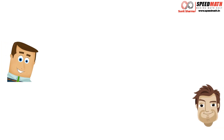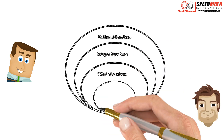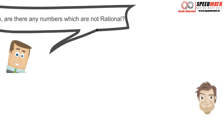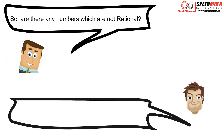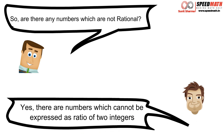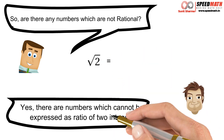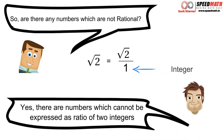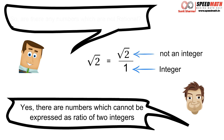Mr. Math notes that rational numbers form the biggest collection so far, and natural numbers, whole numbers, and integers are all part of rational numbers. Mr. Logic asks: are there any numbers which are not rational? Mr. Math says: yes — for example, square root of 2. I can write it as √2/1, but the numerator √2 is not an integer, so √2 cannot be expressed as a ratio of two integers. Therefore √2 is not a rational number — in fact it has a property exactly opposite to rational numbers.